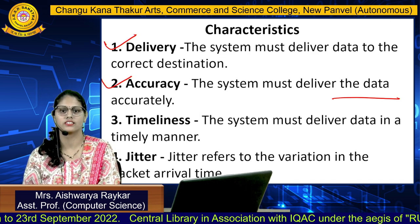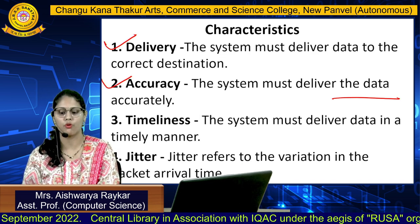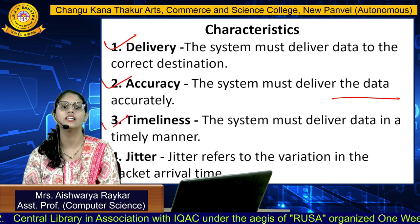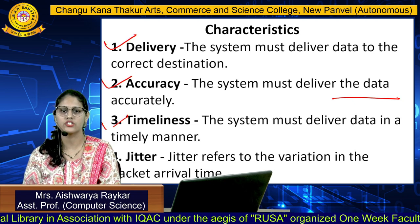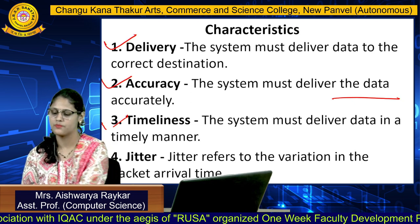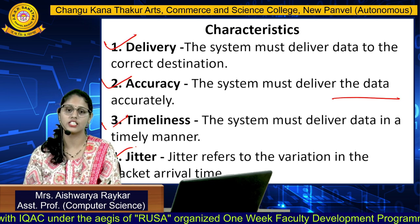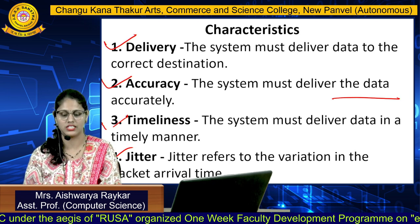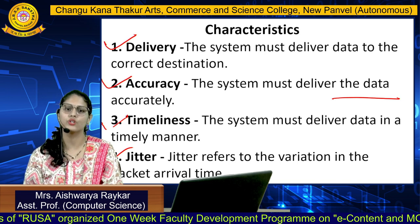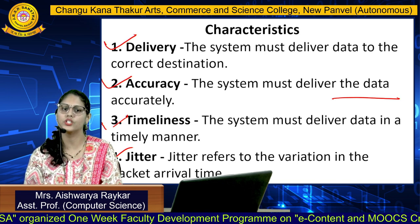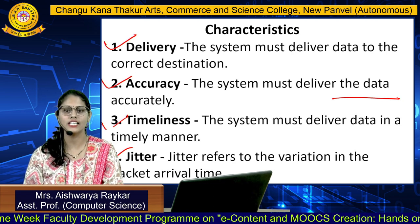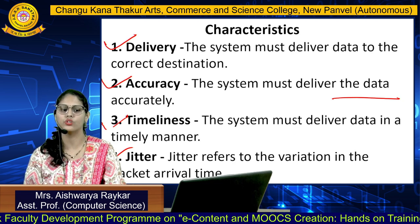After that is timeliness. Time is a very important factor, so timeliness means the system must deliver data in a timely manner. Last but not least is jitter. Jitter means delay — it is nothing but the variation in packet arrival time. For example, if you are sending an audio or video message, you need to ensure that the speed at which the sender is sending is the same speed at which the receiver should receive.